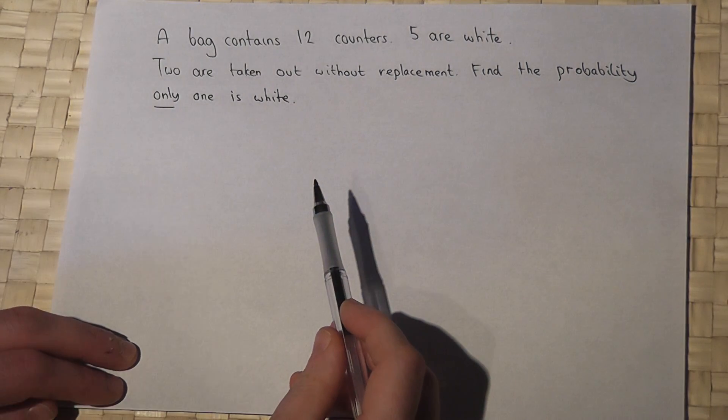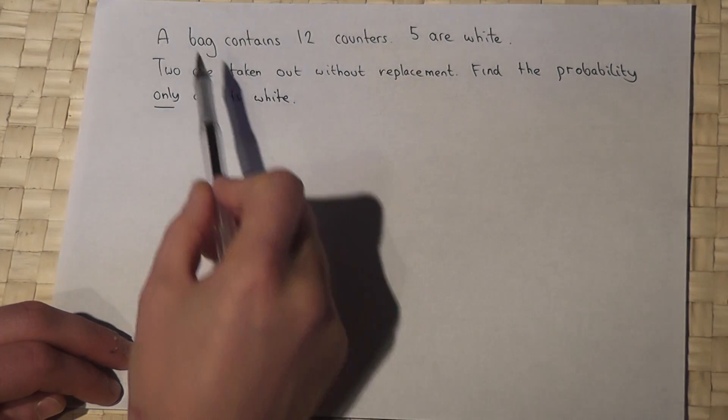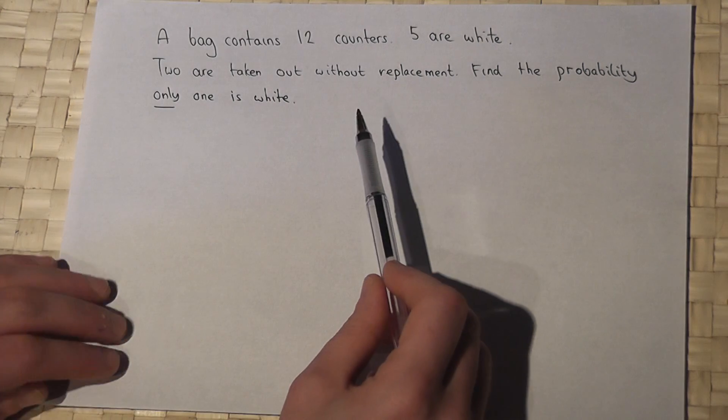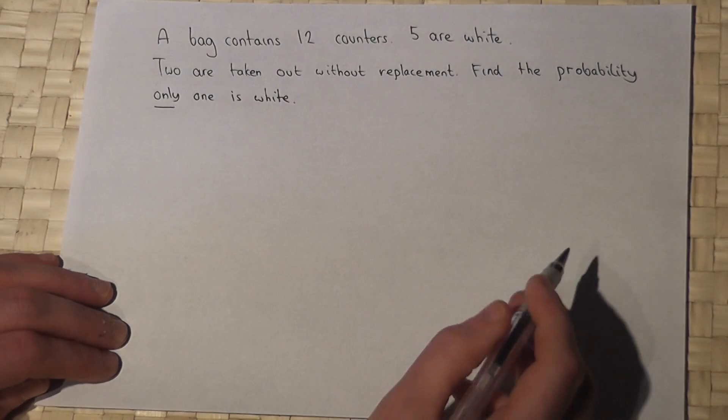This video reviews a typical tree diagram question. A bag contains 12 counters, five are white. The question asks: if you pull two out without replacement, what's the probability that only one is white?